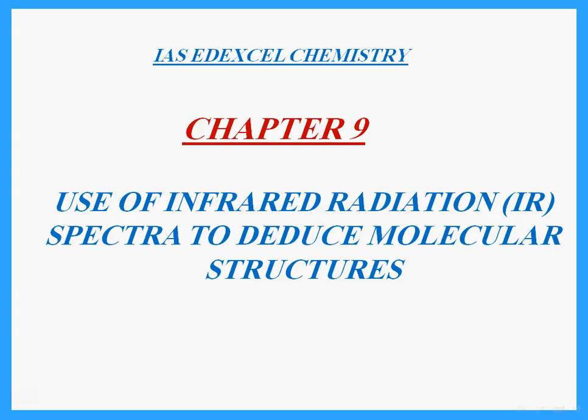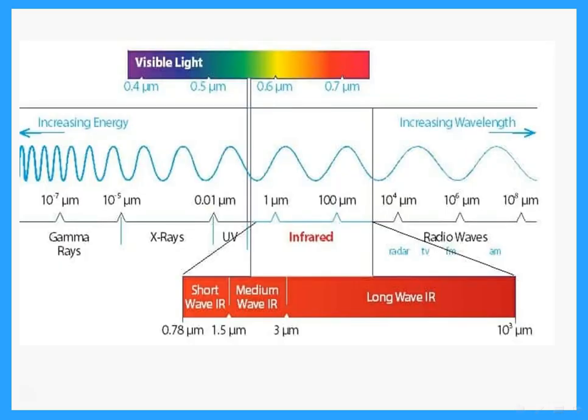Hello, this is Dr. Hannah Asil and today we're talking about infrared radiation and how to use it to deduce molecular structures. This is for IAS A-level chemistry. Infrared is a region in the spectrum right next to the visible — it's just above the red end of visible light.